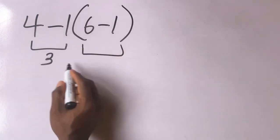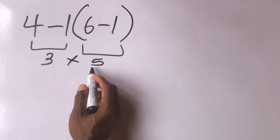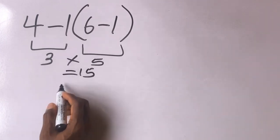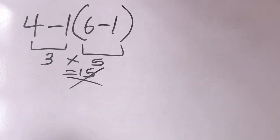6 minus 1 is what? 5. 3 times 5 is what? 15. This answer is not correct.